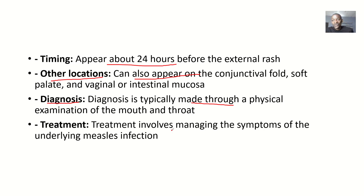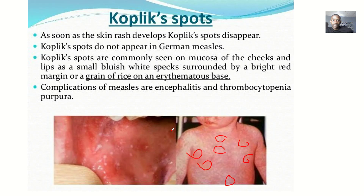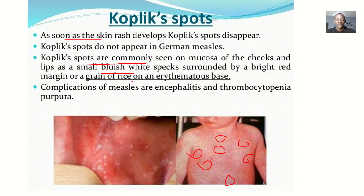It's a sign rather than a symptom, because most of the time the patient will not know they have Koplik spots — you discover them on examination. As soon as the skin rashes develop, the Koplik spots will disappear, meaning the Koplik spots are like preparing the way for skin rashes. Also note: Koplik spots do not appear in German measles. They are commonly seen in the mucosa of the cheeks and lips as small bluish-white specks surrounded by a bright red margin, like a grain of rice on an erythematous base.